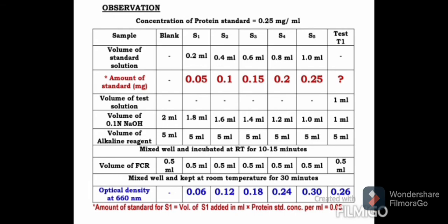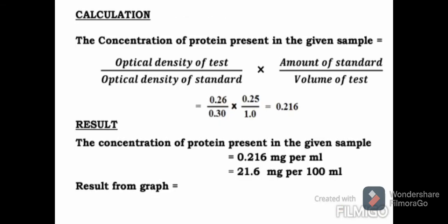Now the calculation: concentration of protein is equal to OD of test T1 divided by OD of standard S5, multiplied by amount of standard S5 divided by volume of test T1. This is equal to 0.216 milligram per ml, which is multiplied by 100, gives a concentration of 21.6 milligram per 100 ml.